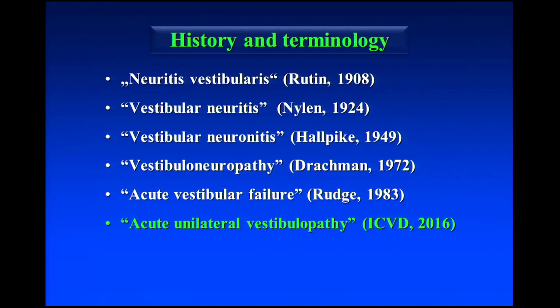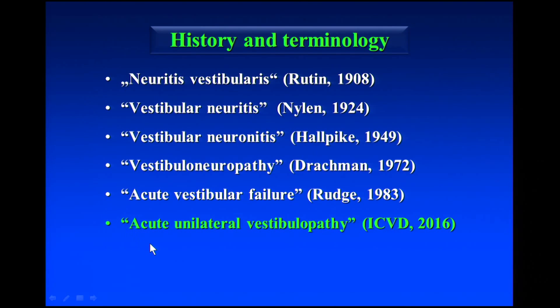The disease was already described in 1908 by an Austrian otorhinolaryngologist Ruttin, and he used the term we often use: Neuritis vestibularis. But now, according to the international classification system of vestibular disorders, it is called acute unilateral vestibulopathy, and this is going to be the term for the future.